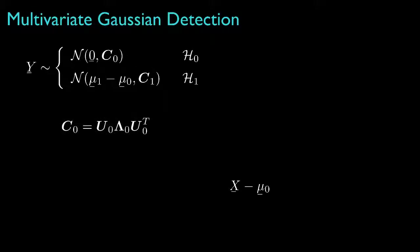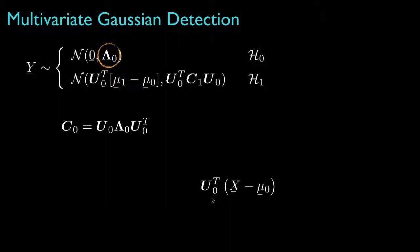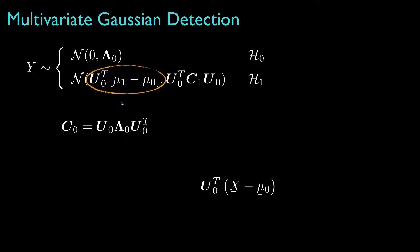Next, we could consider the eigenvalue-eigenvector decomposition for the covariance for hypothesis 0. And if we use the orthonormal matrix of eigenvectors to rotate the transformed data, then the covariance for hypothesis 0 will be the diagonal matrix of eigenvalues for the original covariance matrix. The mean for hypothesis 1 will be the corresponding rotation of the difference between the original means, and the new covariance for hypothesis 1 will be the corresponding transformation of the original covariance for hypothesis 1.